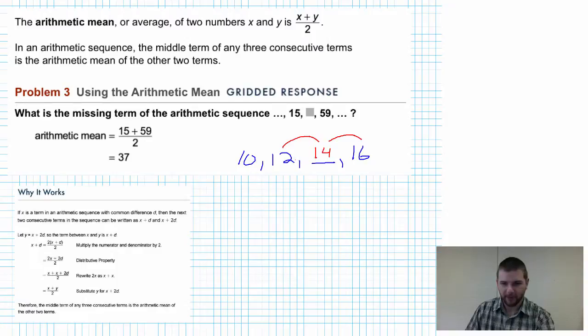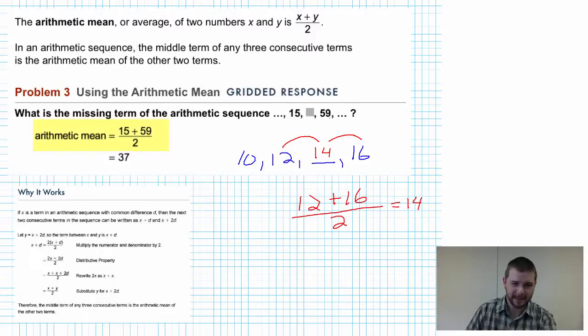So 12 plus 16 divided by 2, because we're adding two values. 28 divided by 2 is 14. So there's an example to show you this working. So let's get back to the problem at hand. 15 plus 59 is 74. 74 divided by 2, 37.